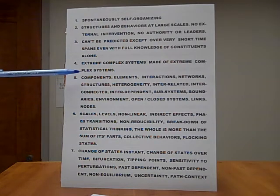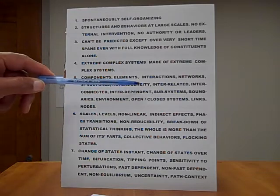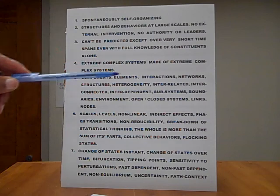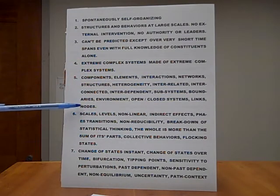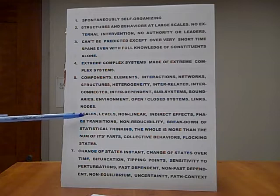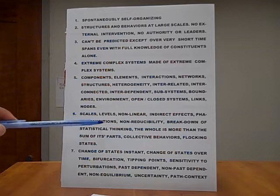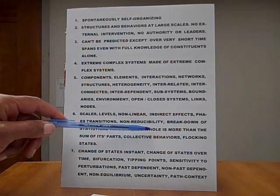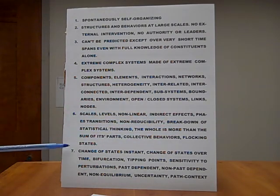A whole book can be written on them. Components, elements, interactions, networks, structures, heterogeneity, interrelated, interconnected, interdependent subsystems, boundaries, environment, open and closed systems, links, nodes. Number six, scales, levels, non-linear, direct effect, phase transitions, non-reducibility, breakdown of statistical thinking. The whole is more than the sum of its parts. Collective behaviors, flocking states, etc.